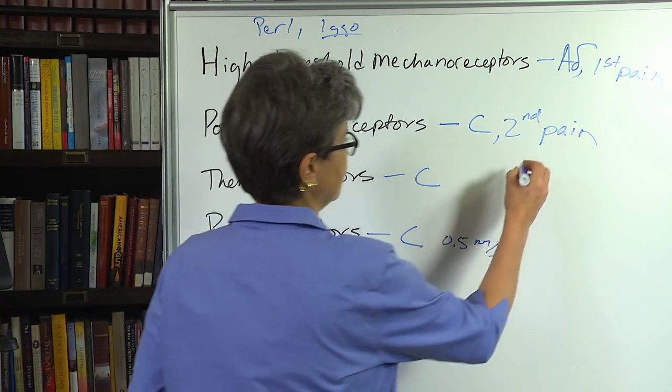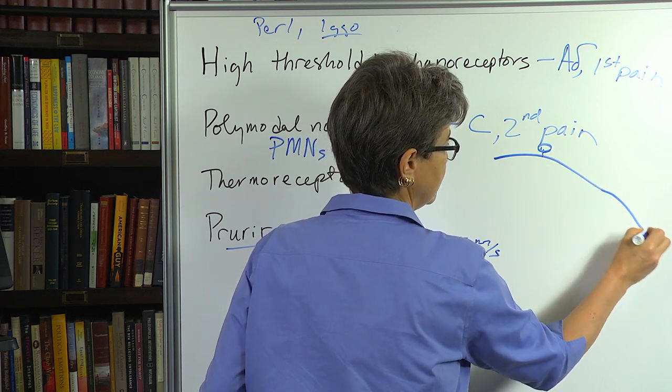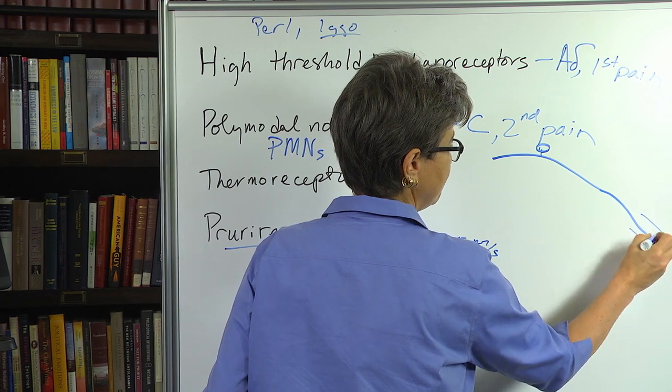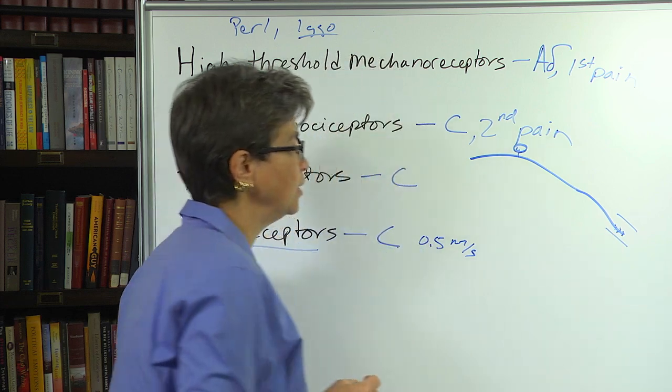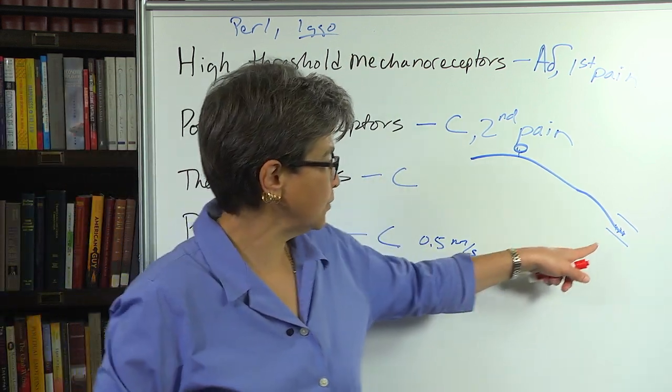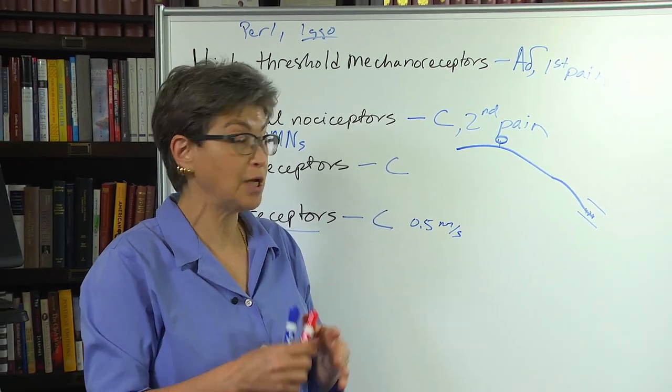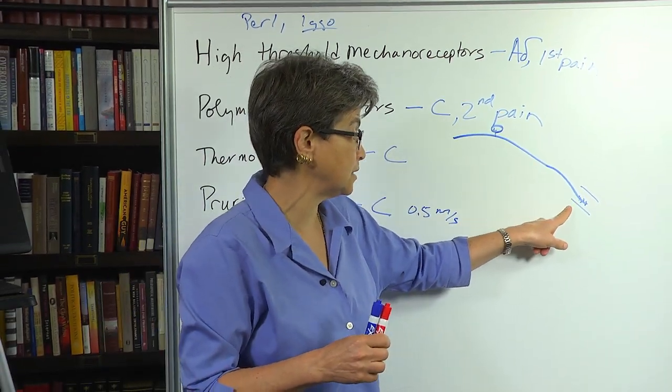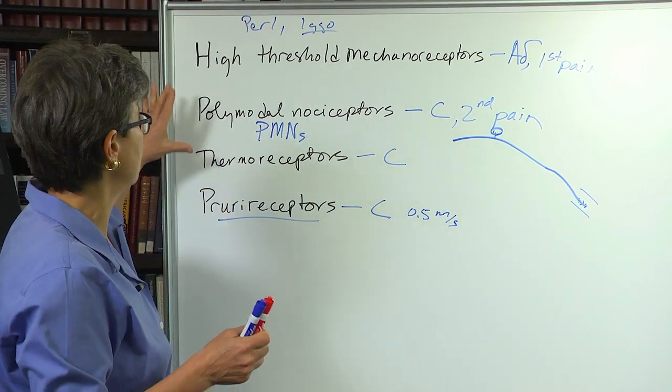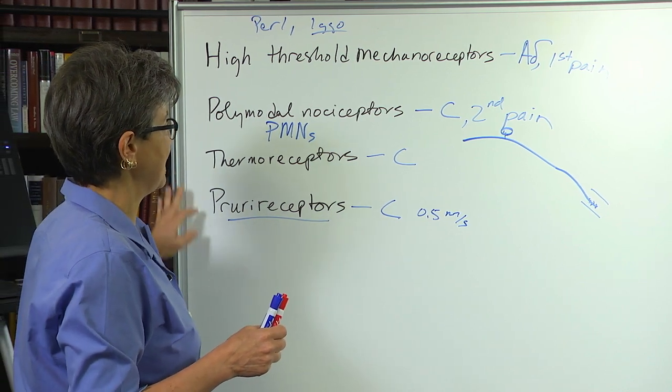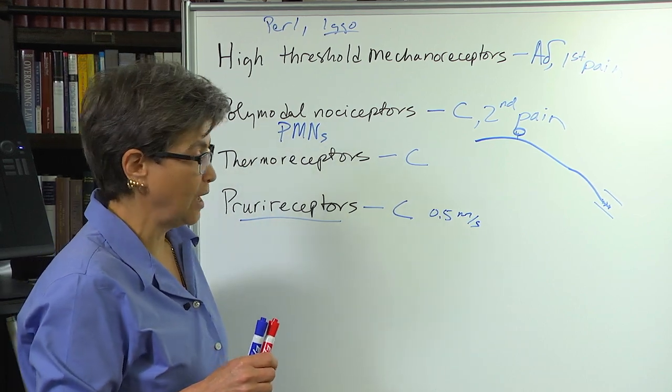So the way that these afferents end is in bare endings, and these bare endings are chock full of different receptors that are sensitive to different types of tissue damage. And that's what we're going to look at in the next video. But for right now, I want to just highlight how you can get problems in one or another of these different types of afferents.